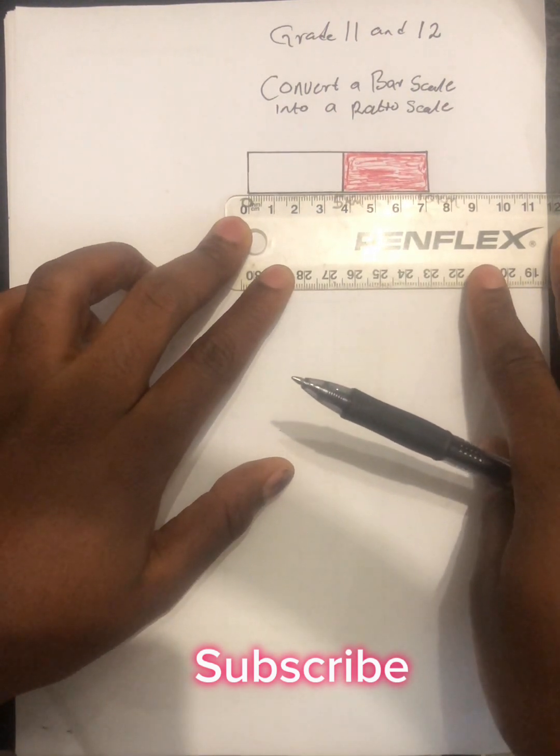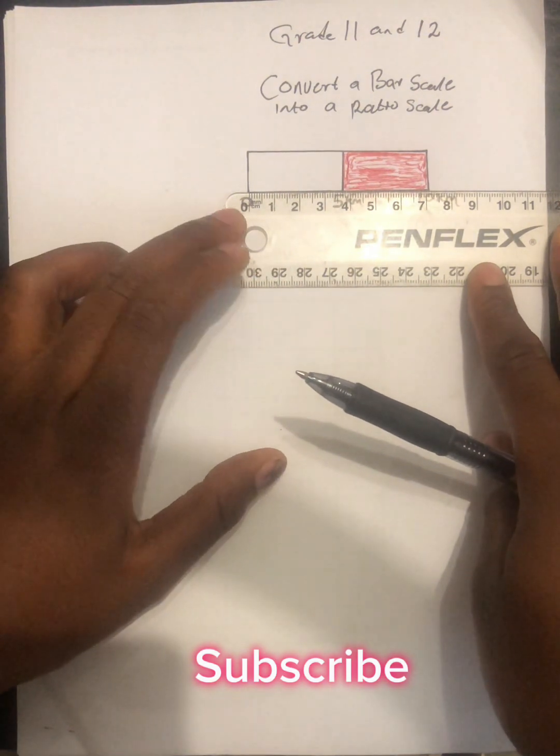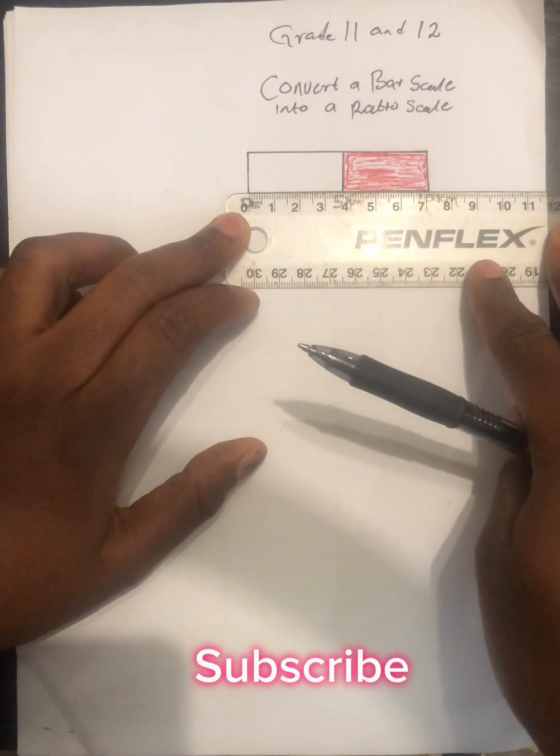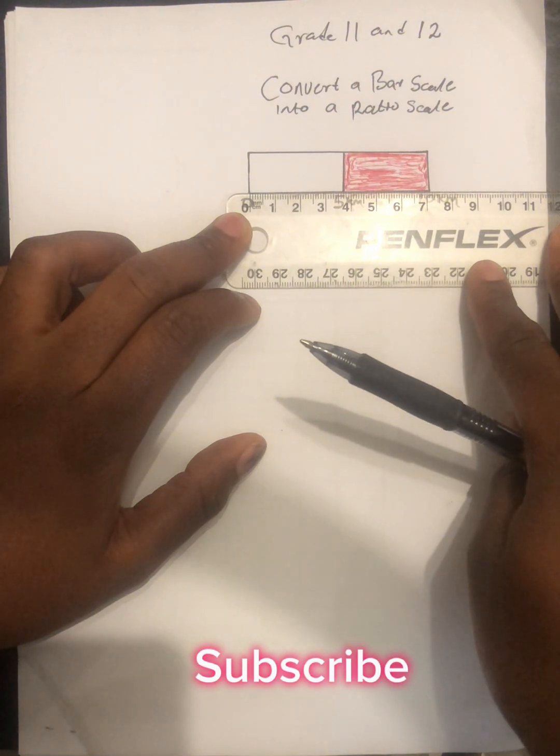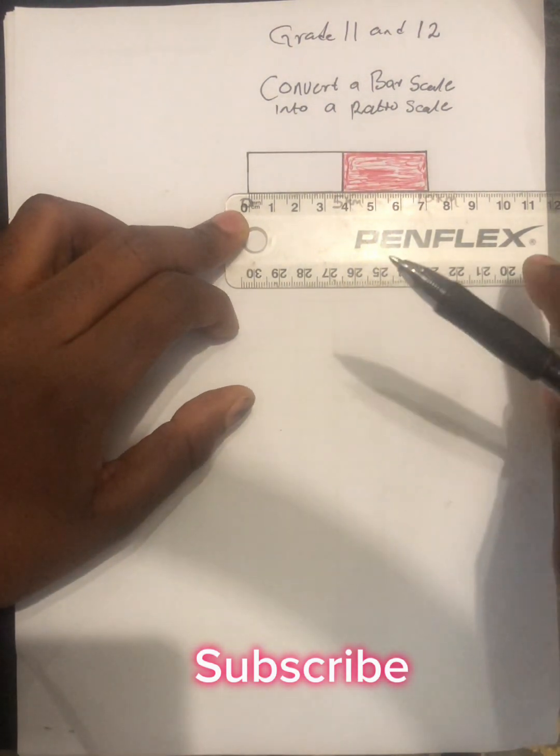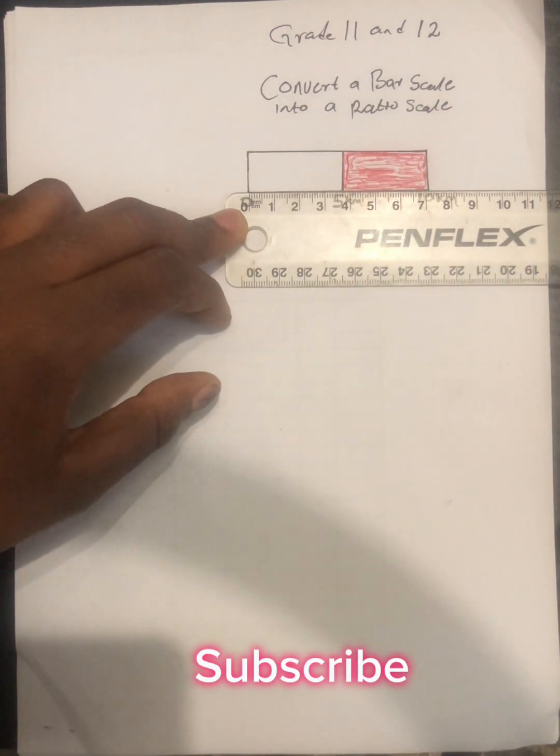If you check carefully here, you'll find that I'm using the centimeters to measure this. We find that our bar scale is 7.1 centimeters. It's 7.1 centimeters when we use the ruler. So that's what you need to do. You just have to write this down.